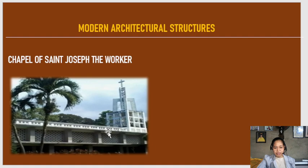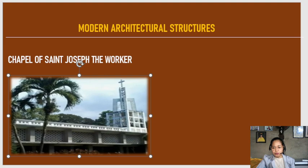Now, the Chapel of St. Joseph the Worker — architect Raymond designed this church to be earthquake-proof. Since the Philippines is located in the earthquake belt, the chapel is made up of two sections: the nave and the tower. They are connected by movable beams, holding the building up well even during earthquakes.